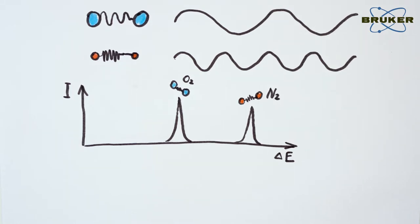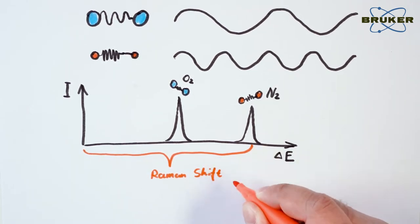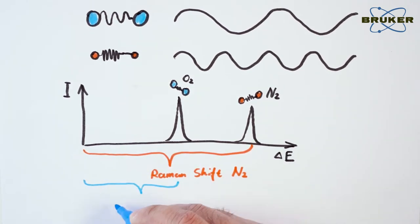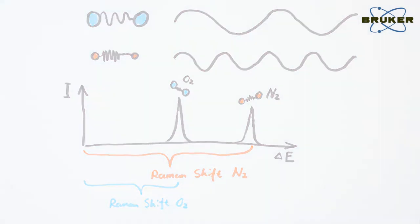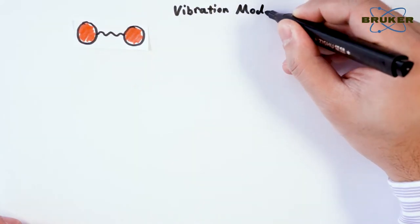And consequently, Raman scattering from oxygen and nitrogen will have a different energy shift. Simple molecules like nitrogen and oxygen have only one vibrational mode.